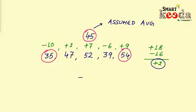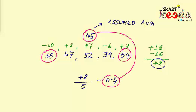Now to find the final average we just need to add this value to the assumed average and we'll get the answer. Therefore the average of these five numbers will be 45 plus 0.4 and that will be 45.4, and that's the answer. Wasn't it simple?